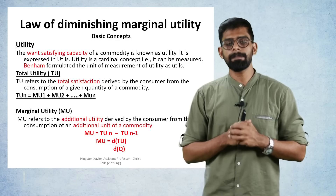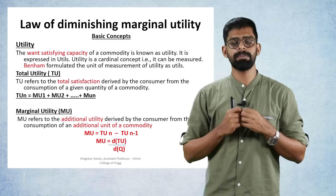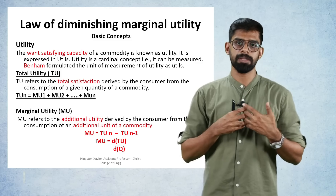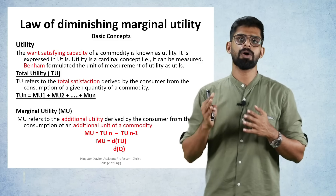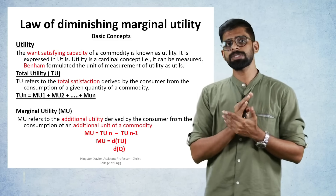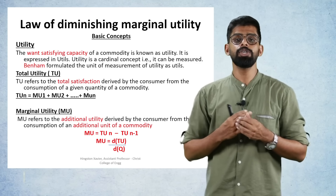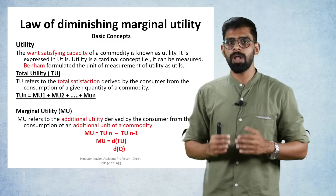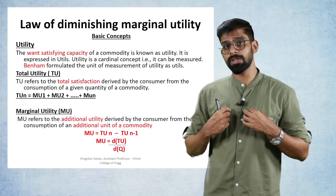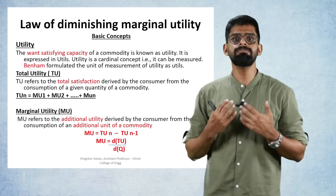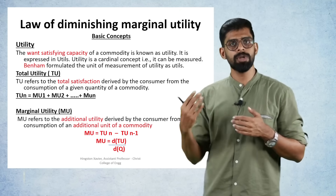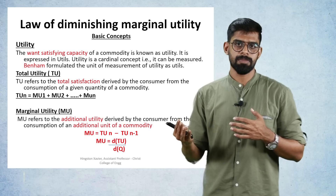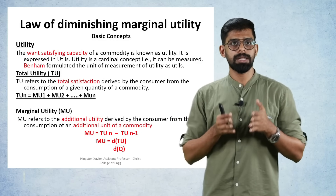The next important topic from Module 1 is the Law of Diminishing Marginal Utility, a very popular theory in economics. The first basic concept is utility. Utility is the want-satisfying capacity of a commodity — it represents the satisfaction derived. Utility is measured using a cardinal concept; it is a measurable concept, and the unit of measurement is called 'utils'.